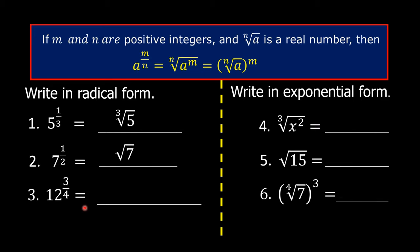Number 3: 12 raised to the exponent of 3 over 4. We are going to use the rule: if m and n are positive integers and the nth root of a is a real number, then a raised to the exponent of m over n is equal to the nth root of a raised to m. The numerator of the fractional exponent is the exponent, and the denominator is the index. So our answer is the fourth root of 12 cubed. The numerator 3 is the exponent of 12 and the denominator 4 is the index.